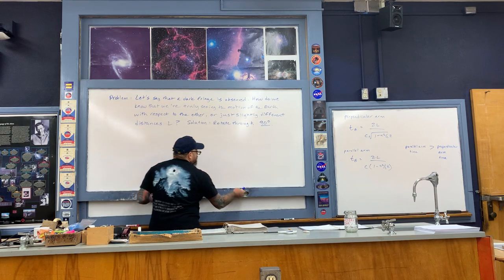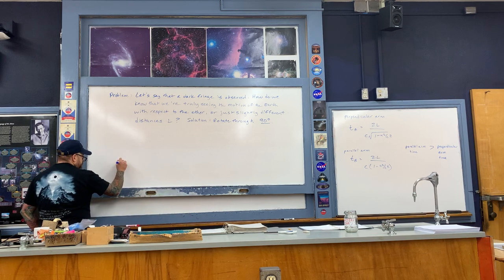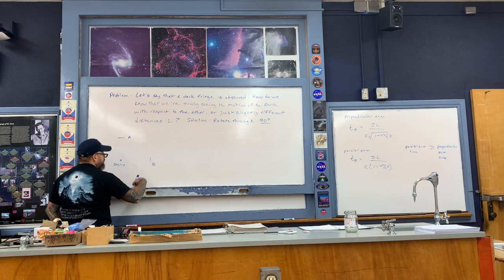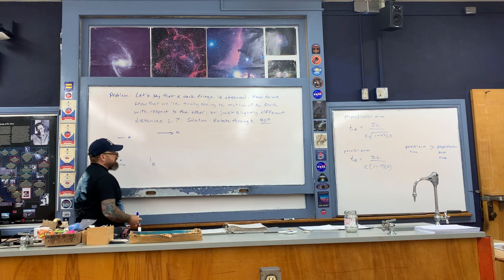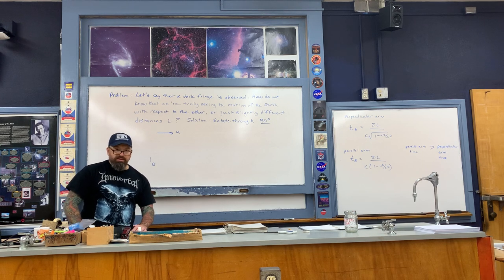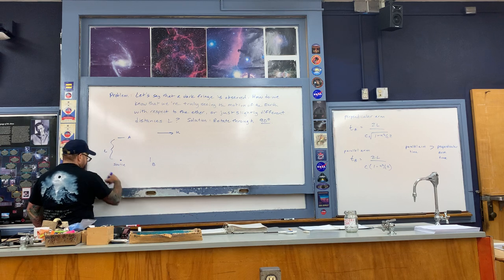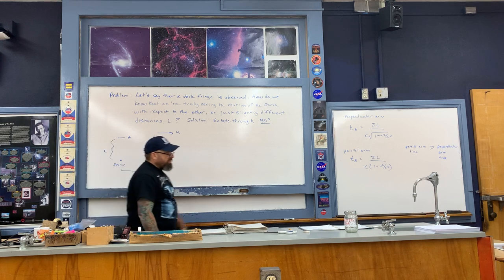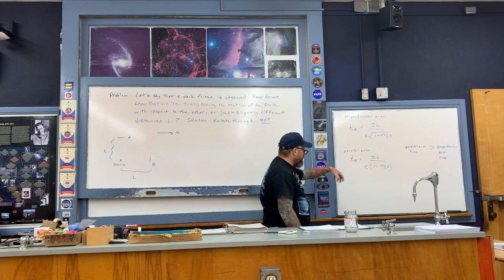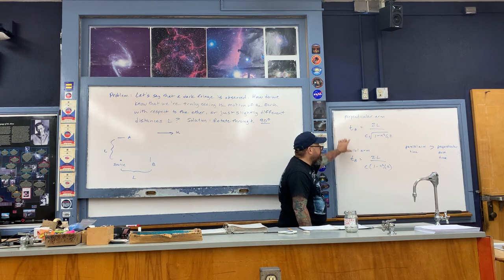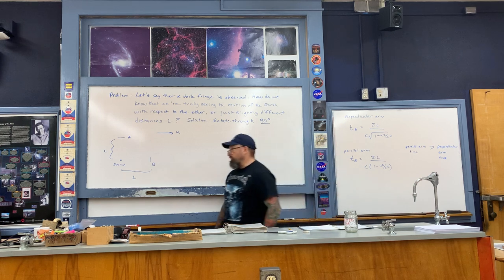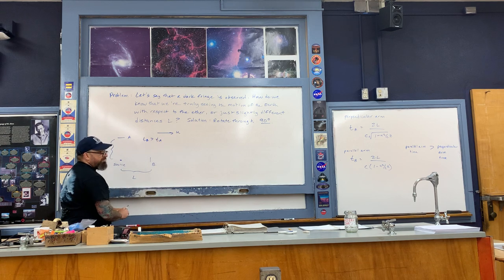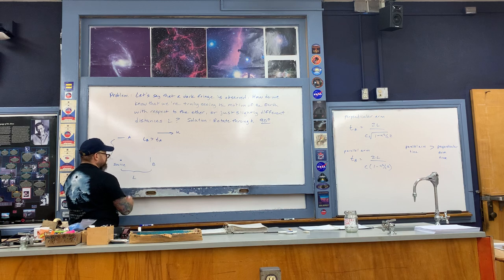Consider the following. We have the interferometer drawn with the source here, mirror A here, and mirror B here. Let's assume that our motion with respect to the ether is as indicated. For now let's say that the L's are in fact the same — this distance is L and this distance is L. We do the experiment in this orientation, and as written on the far right board, the time T sub B for the parallel arm is a little greater than time T sub A for the perpendicular arm. So T sub B is greater than T sub A, and therefore we would see a dark fringe in the center of the interference pattern.